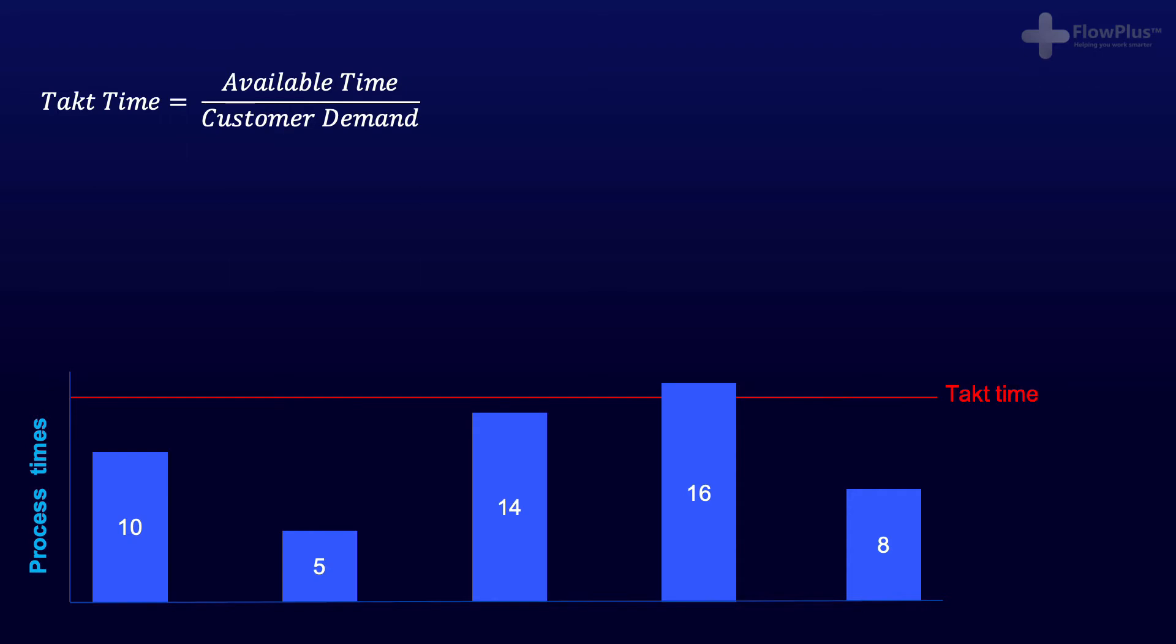Well, the first thing you need to do is calculate the takt time. Remember, takt is available time divided by customer demand. So if there are 480 minutes of available working time in a day, and the customer demand is 32 products a day, the takt time is 15 minutes.